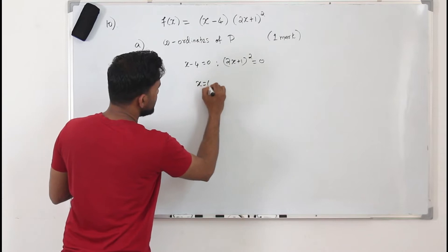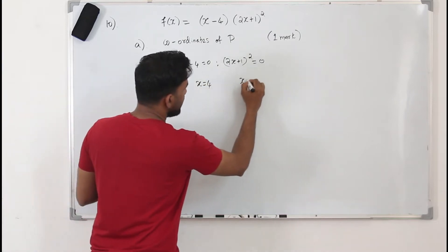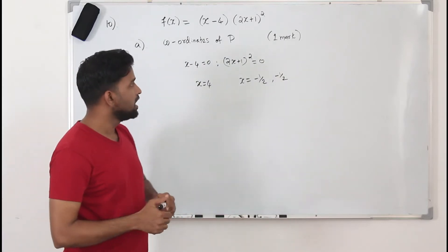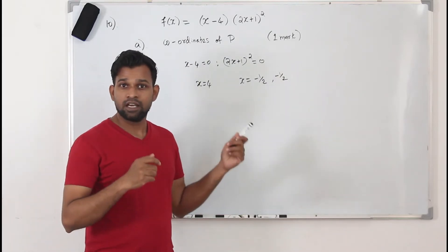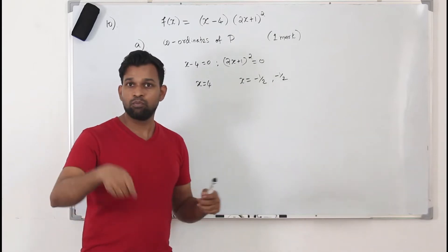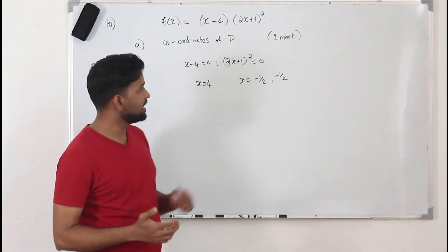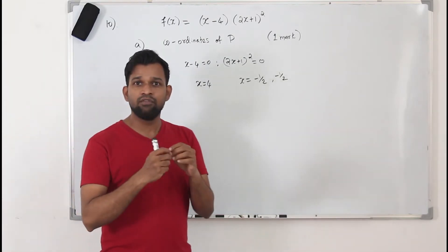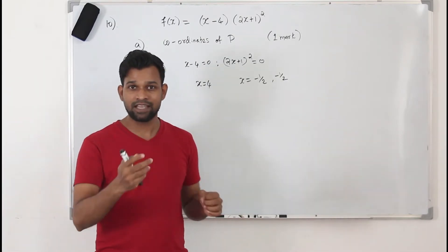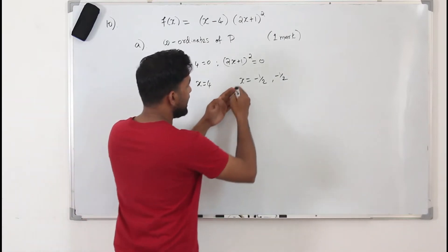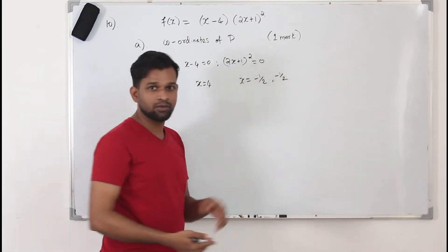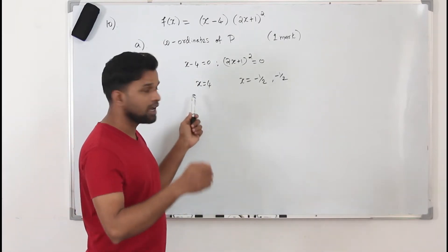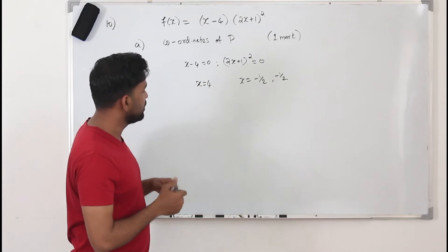That means you will get two solutions: x is 4 and x is minus 1/2. That means two equal solutions, and we need these points in order to sketch the cubic graph. When we sketch the cubic graph, the graph will usually touch the x-axis where x has two equal values, and it will pass through the x-axis at the other distinct point.